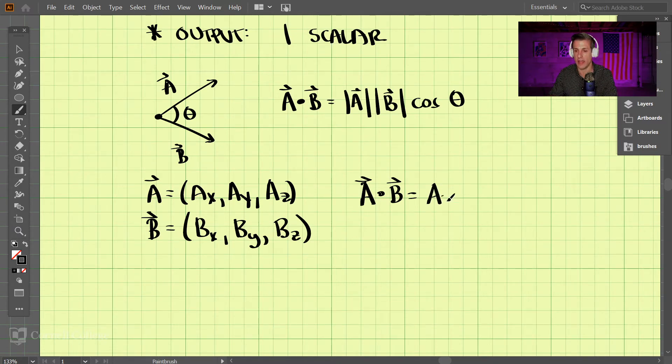Ax times Bx plus Ay times By plus Az times Bz. Notice that there's no i, j, k components in here—we just add these all together, so we get a single value. Given two vectors, you can find the dot product like this.